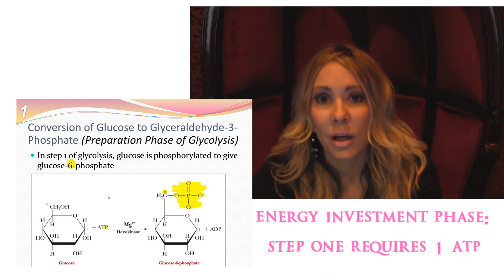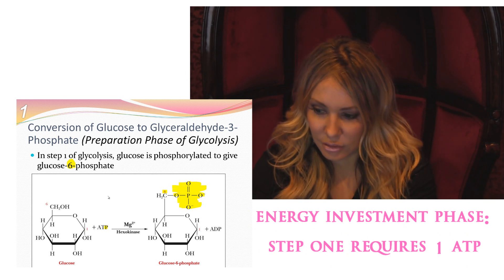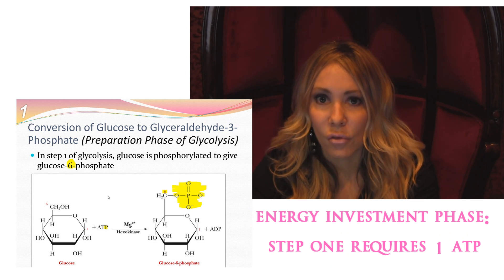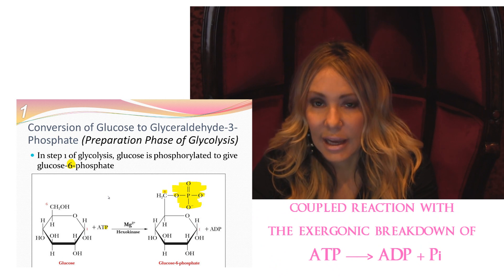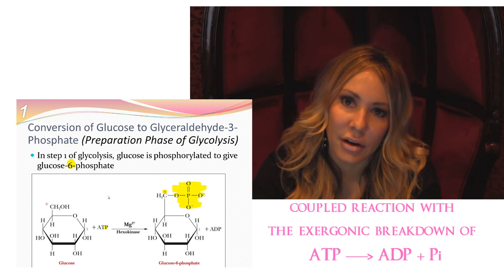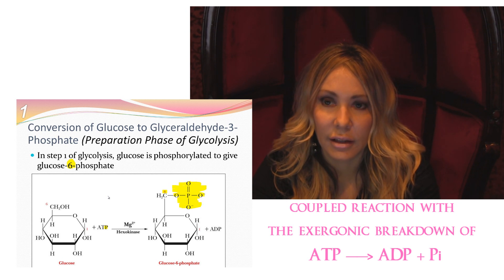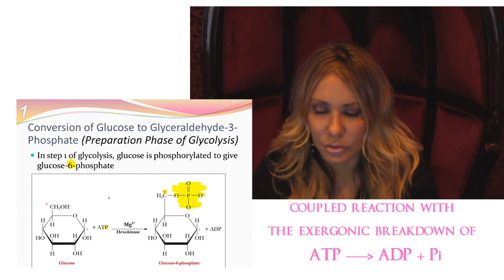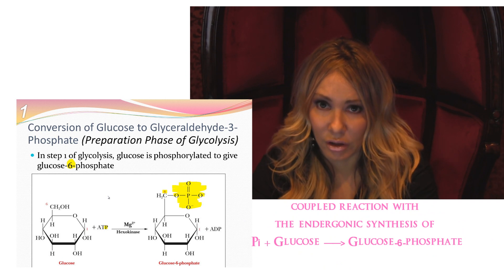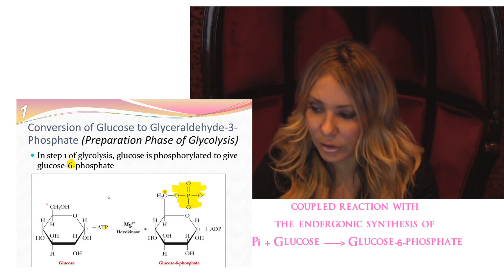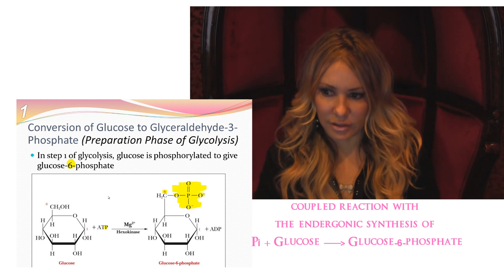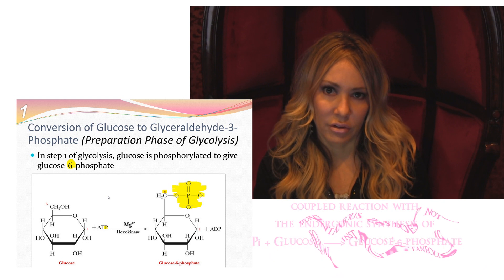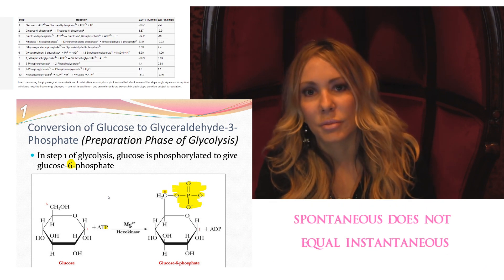That's step one. It did require an ATP to react, but it is an overall coupled reaction — it is exergonic overall. If you were to split this into two reactions: ATP yielding ADP plus Pi would be exergonic, releasing negative 30.5 kilojoules. The endergonic portion would be glucose to glucose-6-phosphate. But if you add these coupled reactions, and as long as they are overall exergonic, we can assume they are spontaneous.